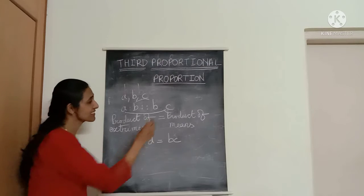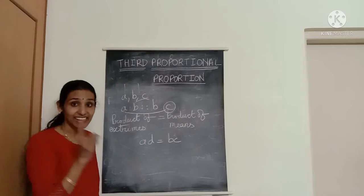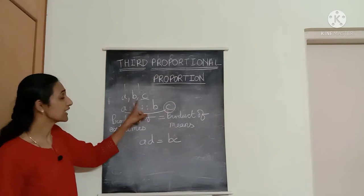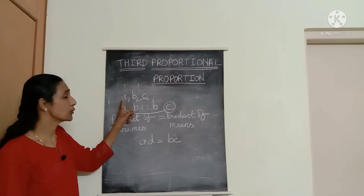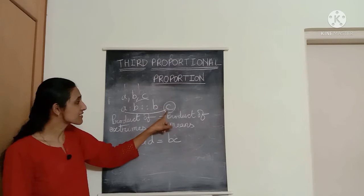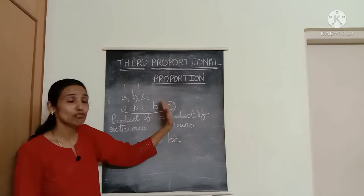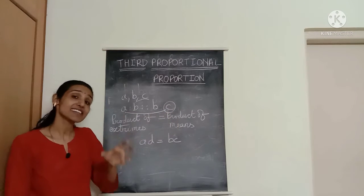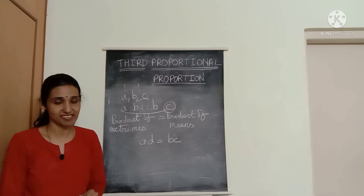This term C is the third proportional — C is the third proportional to the terms A and B. Note that even though C is in the fourth position in the original four-term proportion setup, it is still called the third proportional.